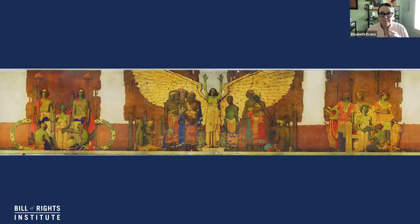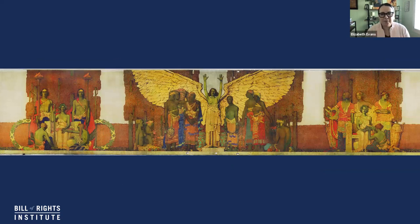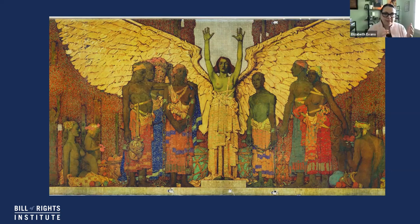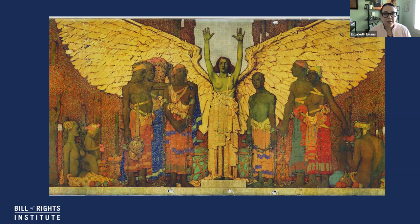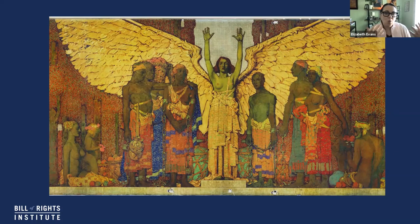We're going to look through each of the big panels to give you a better look. This is the central panel, and this shows the angel. This is actually a symbol of the angel of truth. The angel of truth here is releasing enslaved persons from the shackles of bondage, and you can see shackles on the people that are around her. This goes with the theme of emancipation above the address. Henry Bacon and Jules Guerin thought that one of the biggest things about Lincoln — one of the bigger things in his presidency — was the Emancipation Proclamation. It's interesting to see these historical narratives of what different people think are the center points of Lincoln's presidency.